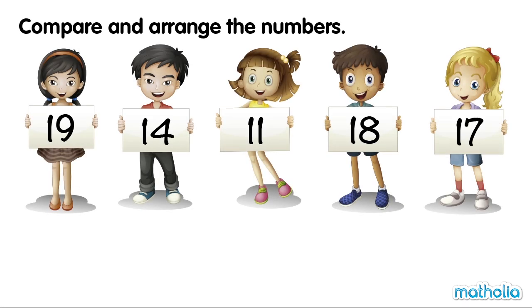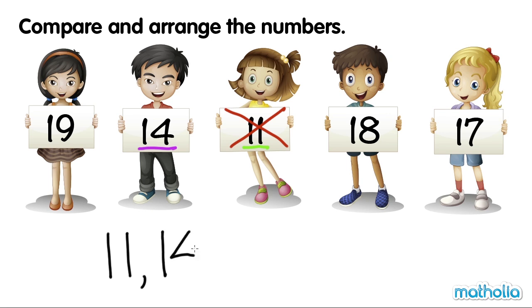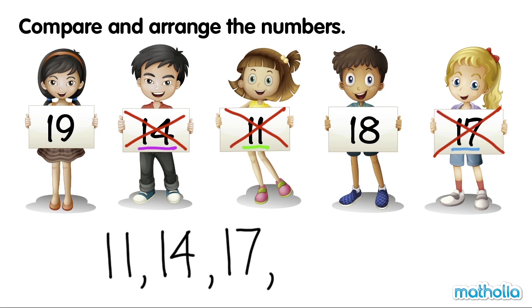Compare and arrange the numbers. Let's arrange the numbers from the smallest to the greatest. 11 is the smallest number. Of the remaining numbers, 14 is the smallest number. Of the remaining three numbers, 17 is the smallest number. The remaining two numbers are 18 and 19. 18 is the next number, and 19 is the greatest number.